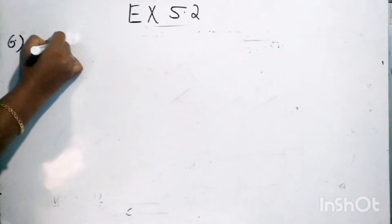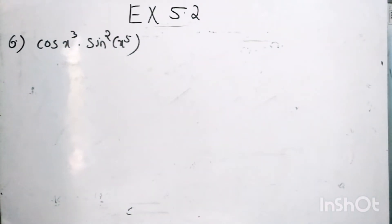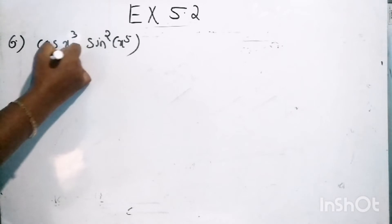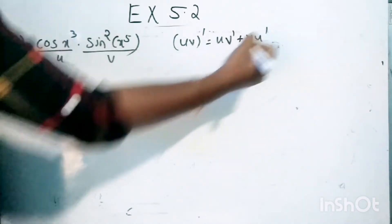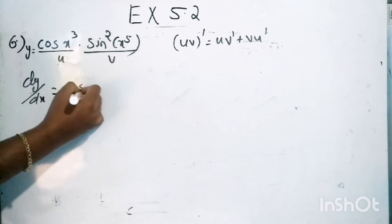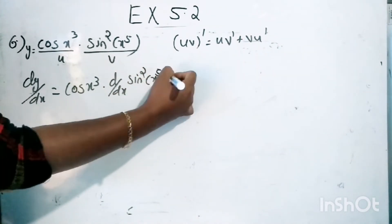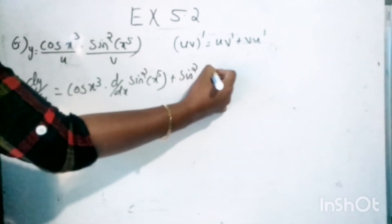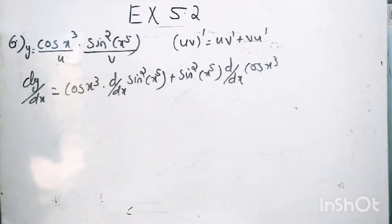The sixth question is cos x cube into sin square of x raise to 5. Here we have two functions; since this is u and this is v, then the product rule gives uv dash is equal to u into v dash plus v into u dash.